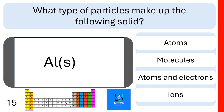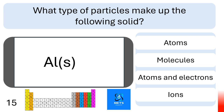Question fifteen: what type of particles make up aluminium solid? Is it made up of atoms, molecules, atoms and electrons, or ions? This is a metal, so it is made up of atoms and delocalized electrons.